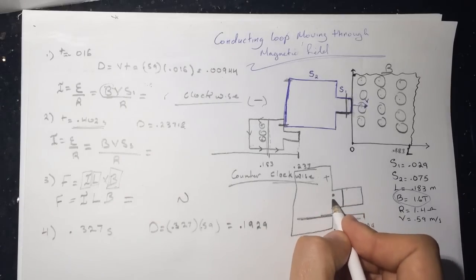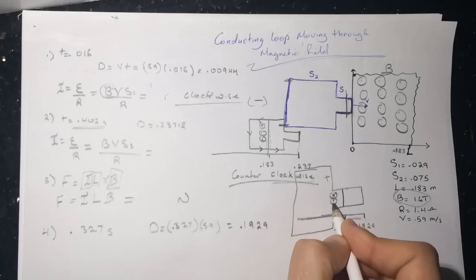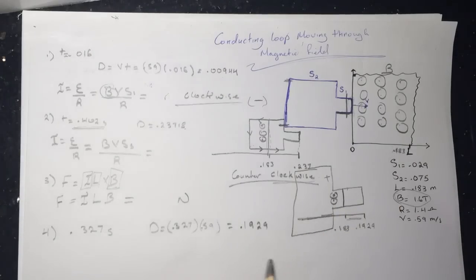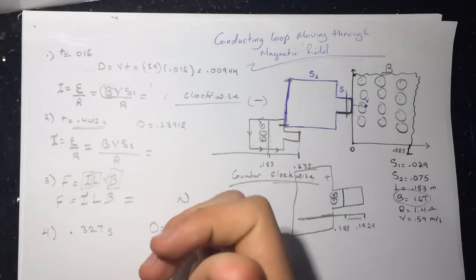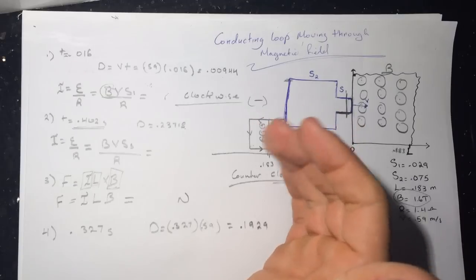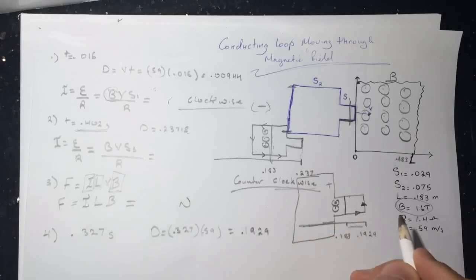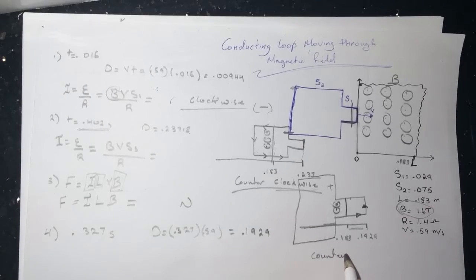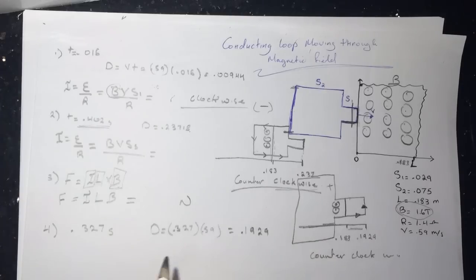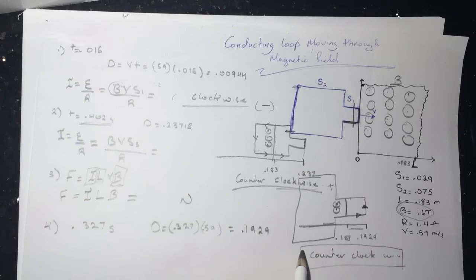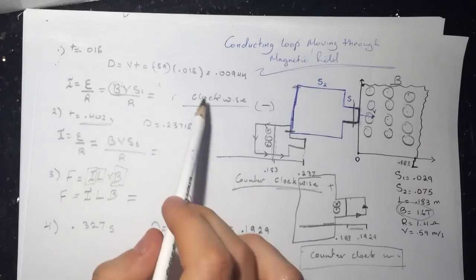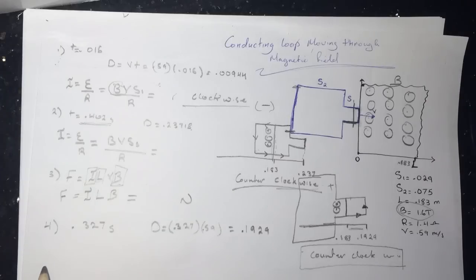But since now we're losing dots, then the induced current will produce more dots. So to produce more dots, our thumb points in the magnetic field and our fingers curl with the direction of the current. So it's going to go this way, which is counterclockwise. This one is also counterclockwise. So this answer is the same as the one from number 1, but it's counterclockwise. It was clockwise, but now it's counterclockwise.